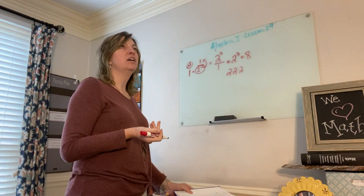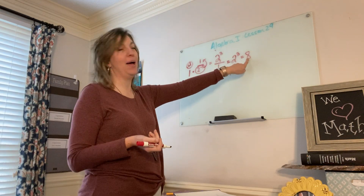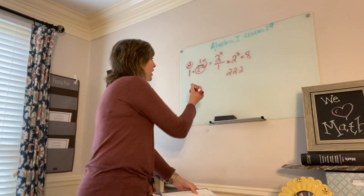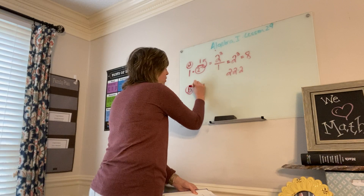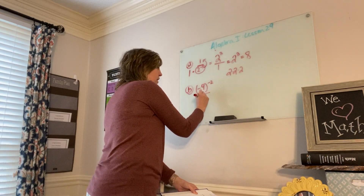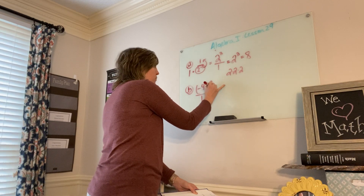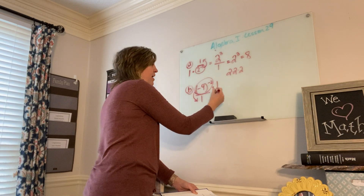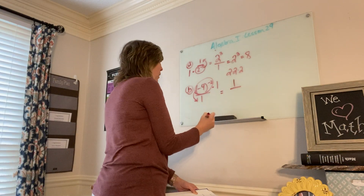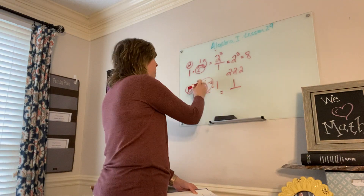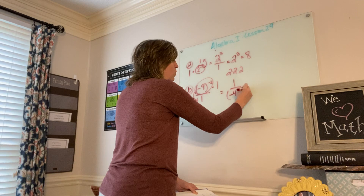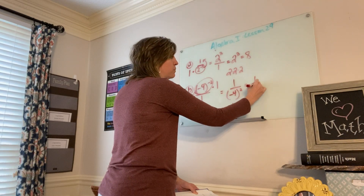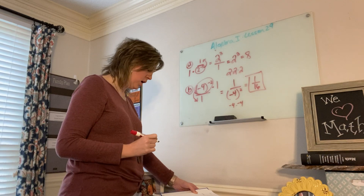Letter B says negative 4 to the negative 2. That's understood as over 1. Only this gets moved because it's the only negative exponent. The 1 stays in the numerator. Negative 4 squared: negative 4 times negative 4 makes positive 16. So the answer is 1 over 16.